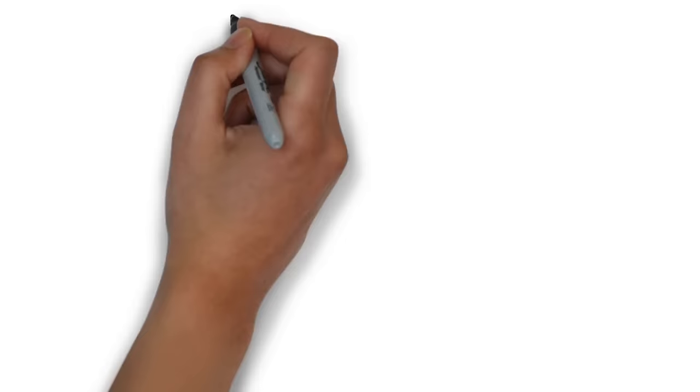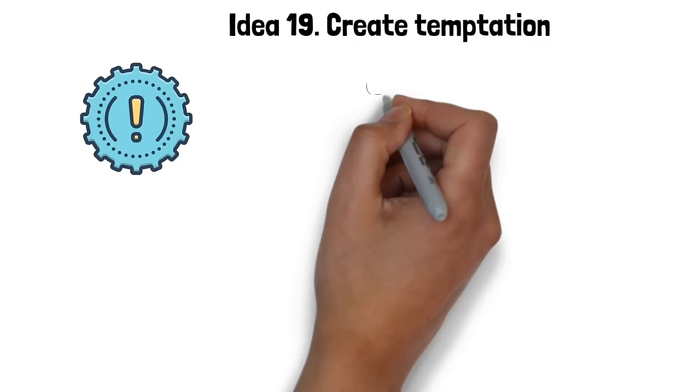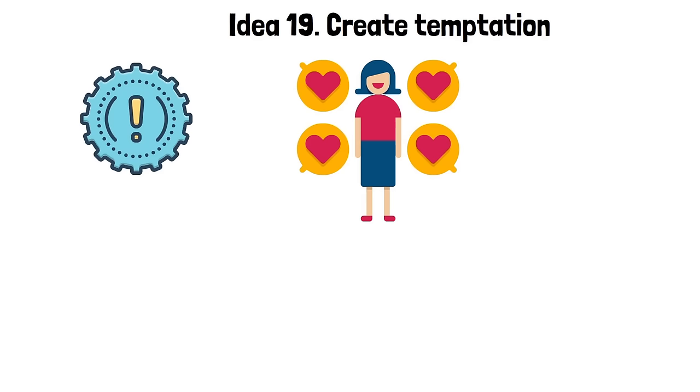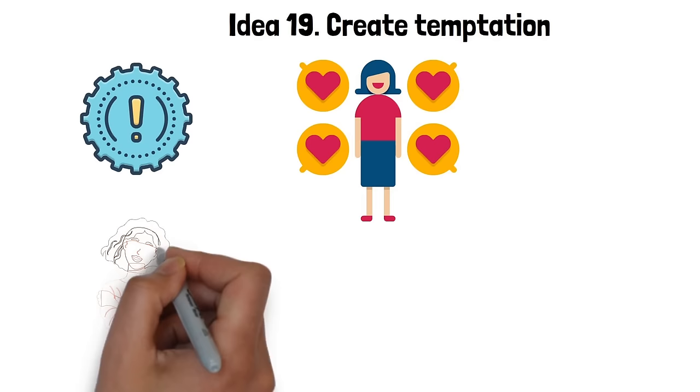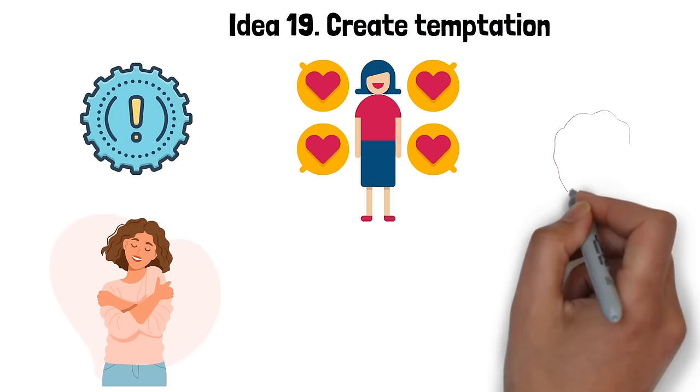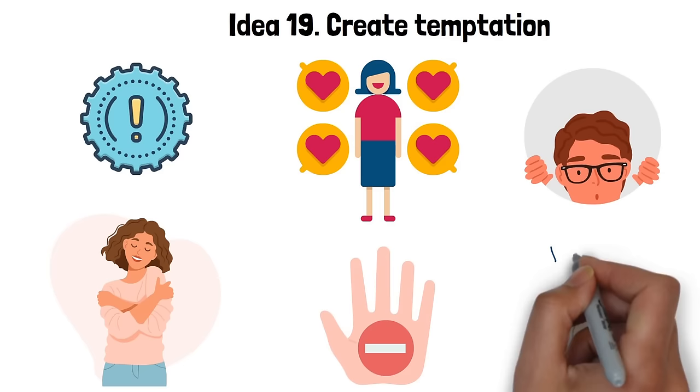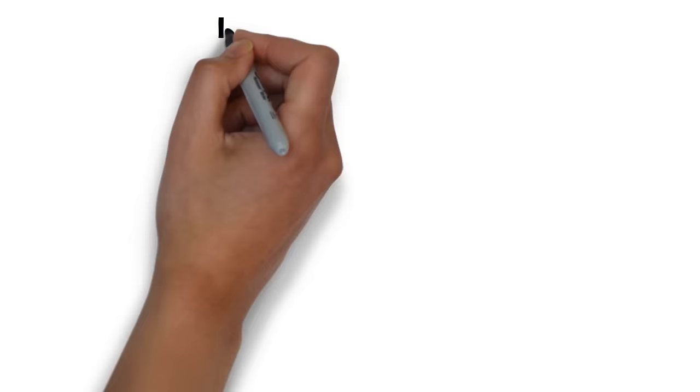Idea 19. Create temptation. Creating temptation is a significant part of the art of seduction. It involves sparking a strong desire within the person you're attempting to seduce. This might be achieved by presenting something they desire, presenting yourself as an embodiment of this desire, or hinting at the thrill or satisfaction that could come from giving in to this temptation. It's about building anticipation and stirring curiosity, making the other person long for the promise of pleasure or fulfillment. The idea of the forbidden or the tantalizingly out of reach can often enhance this sense of temptation. The trick lies in not satisfying this desire too quickly, maintaining the allure and the excitement of the chase.